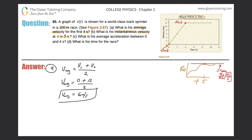Here, they want us to calculate the instantaneous velocity, but they gave us the velocity graph — velocity versus time. Reframing it: what is his velocity at 5 seconds? At 5 seconds, going up to the graph, the velocity is the same as at 4 seconds — it's 12 meters per second. So the answer for part B is 12 meters per second.